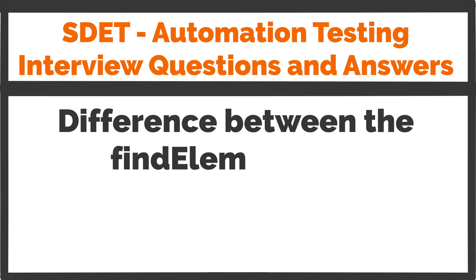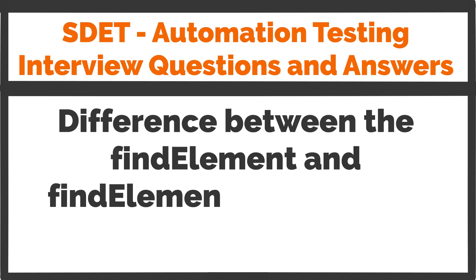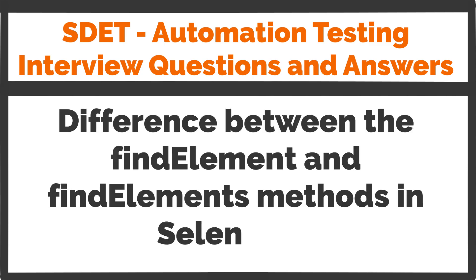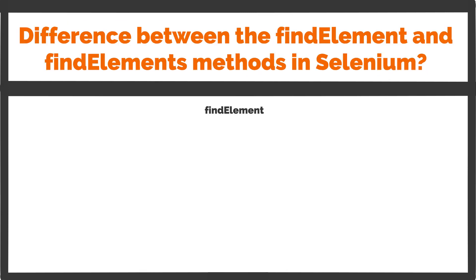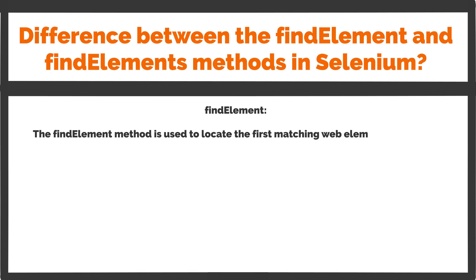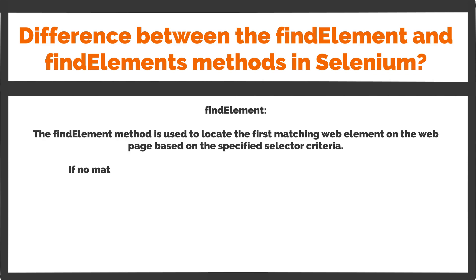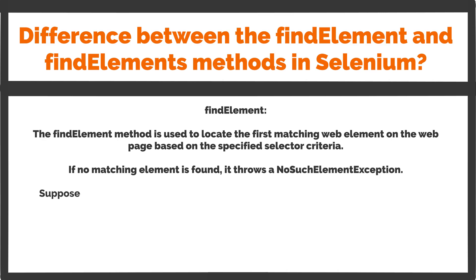Difference between the find element and find elements methods in Selenium. The find element method is used to locate the first matching web element on the web page based on the specified selector criteria. If no matching element is found, it throws a no such element exception.